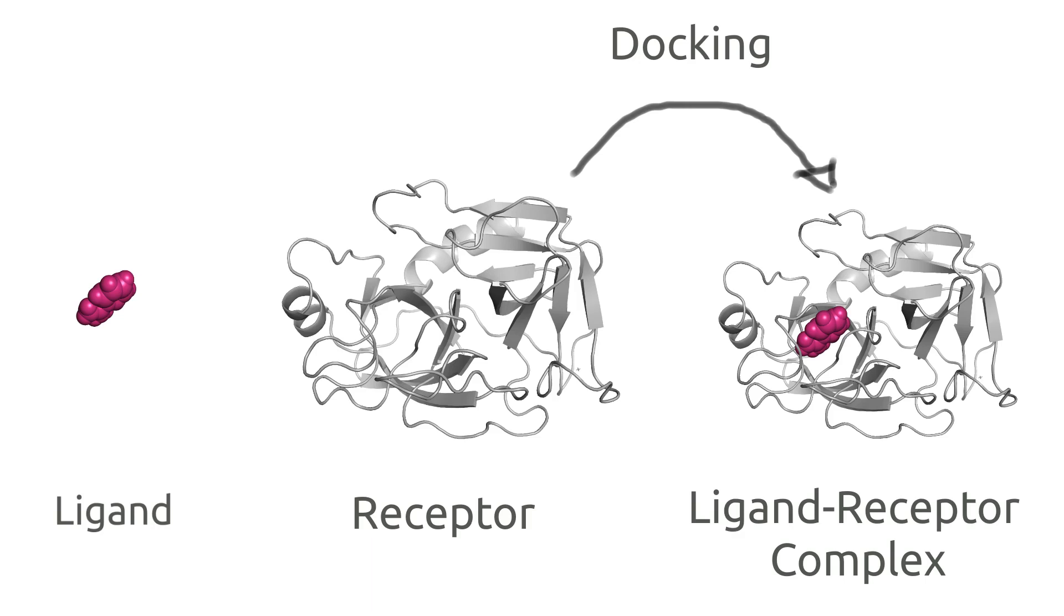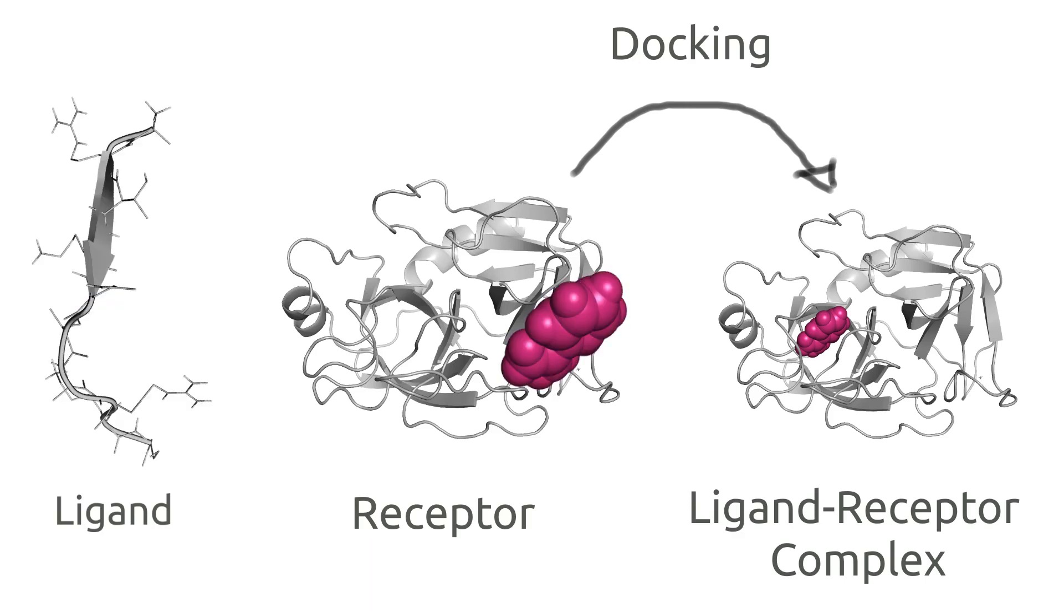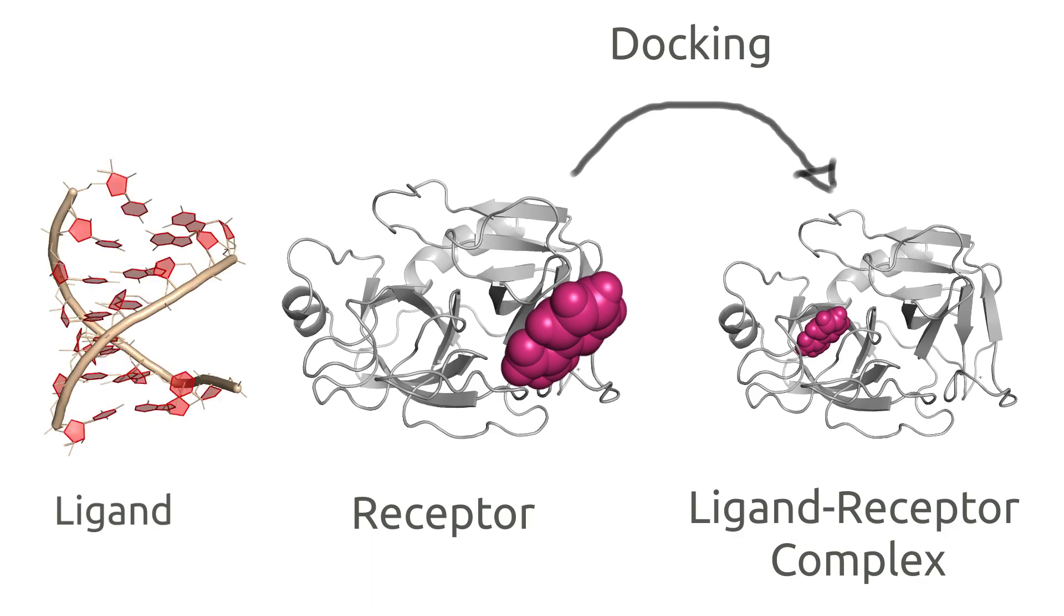Molecular docking is a method which predicts the preferred binding position of one molecule, which is usually called a ligand, to a second one, which is usually called a receptor. Docking can be done with small ligand molecules like the one presented here, but can also be done with peptides, peptidomimetics, RNA, DNA.